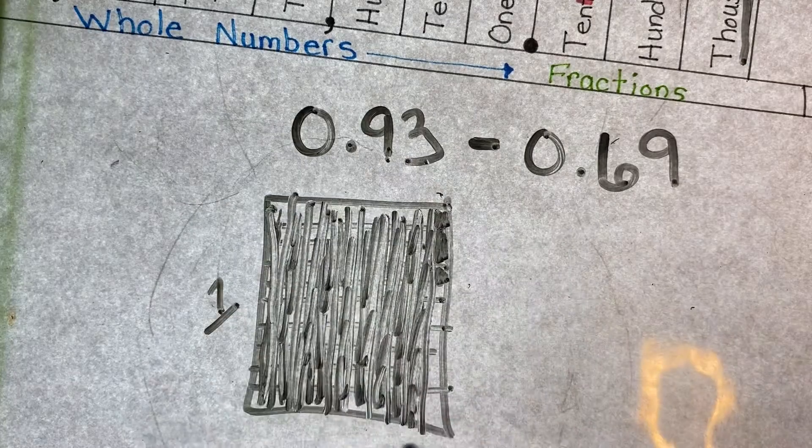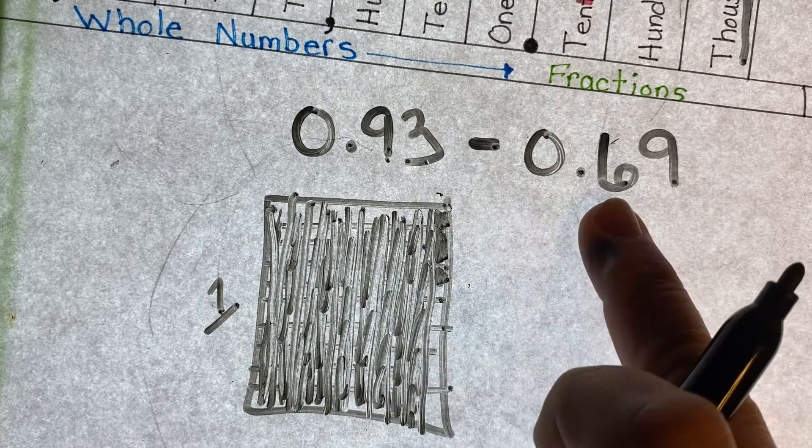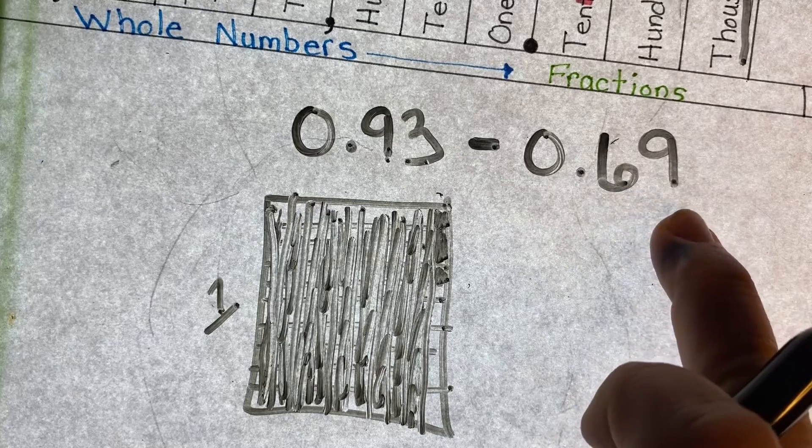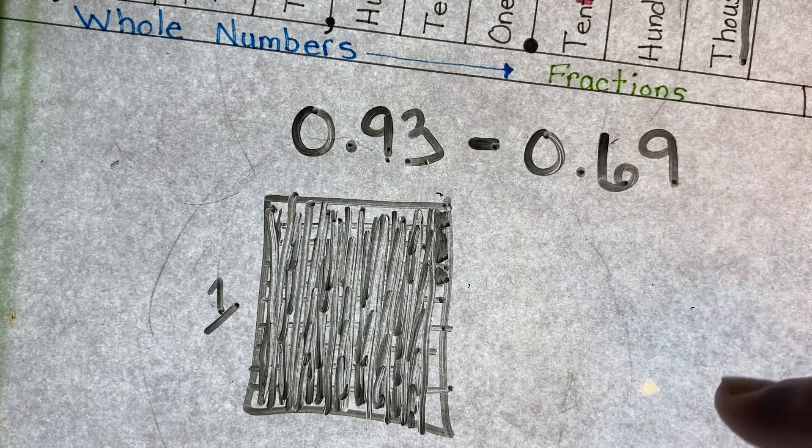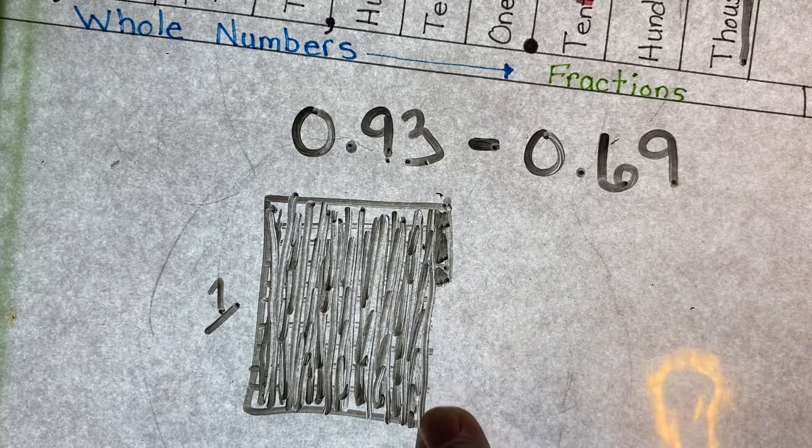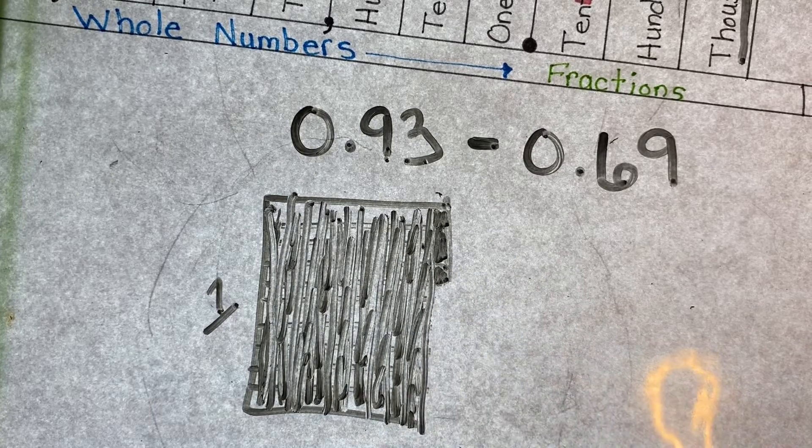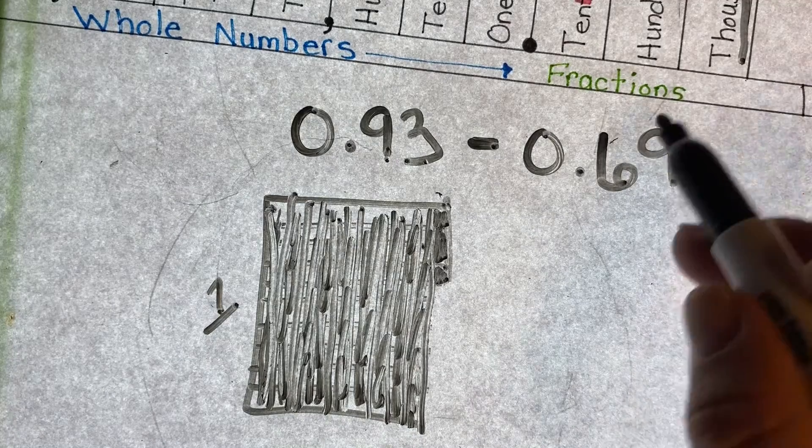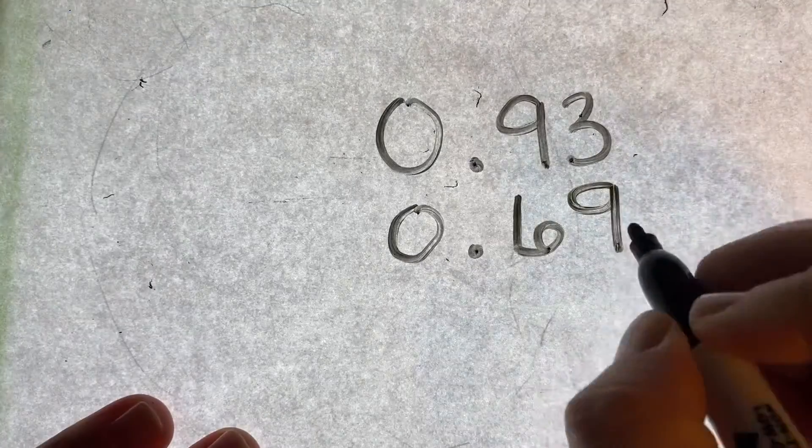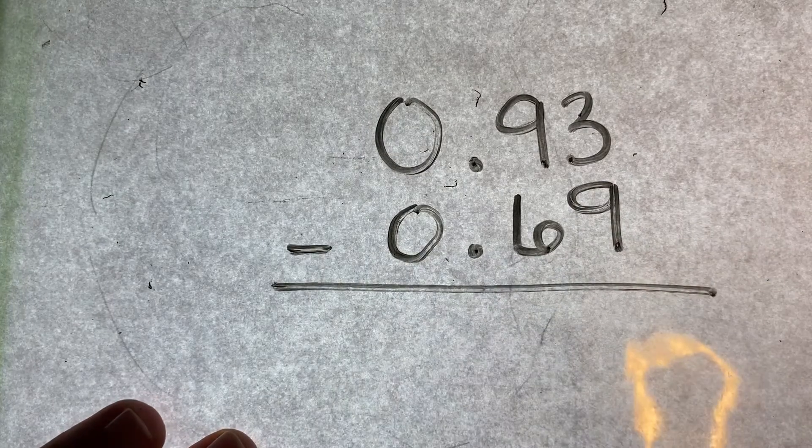And from this I have to take away sixty-nine hundredths. So that means this is all I have, and I'm taking away sixty-nine hundredths.